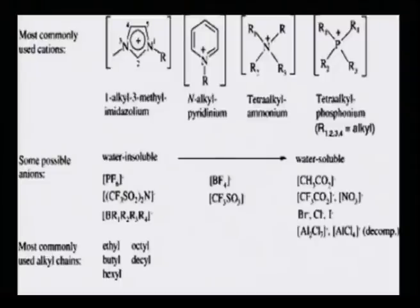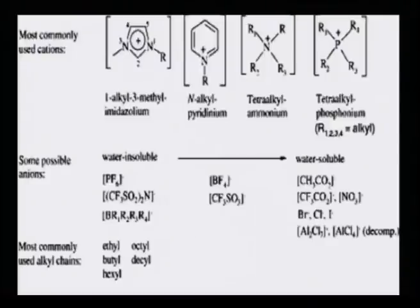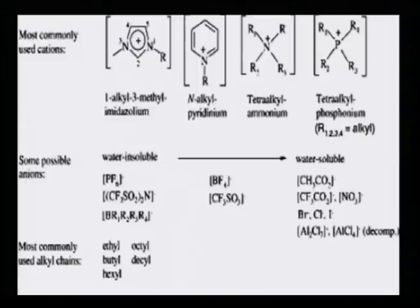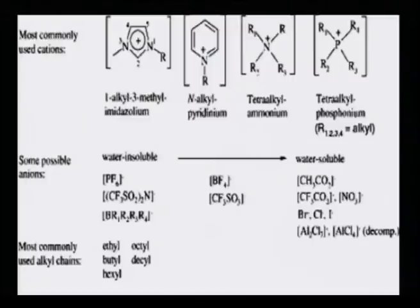Here are some of the examples shown pictorially. Most commonly used cations are 1-alkyl-3-methylimidazolium, N-alkyl-pyridinium, tetra-alkyl-ammonium and tetra-alkyl-phosphonium. Some of the possible anions, ranging from water-insoluble to soluble, include PF6⁻, BF4⁻, or acetate (CH3CO2⁻). We also have different sulfonates, nitrates, and halides such as bromide, chloride, and iodide. Most commonly used alkyl chains are ethyl, butyl, hexyl, octyl and decyl.